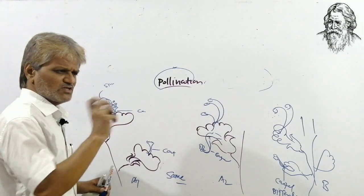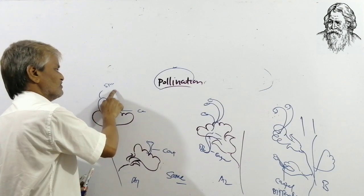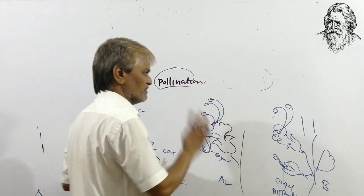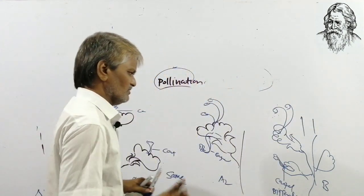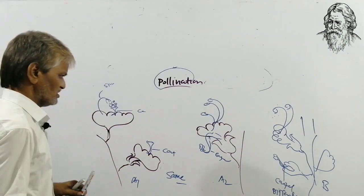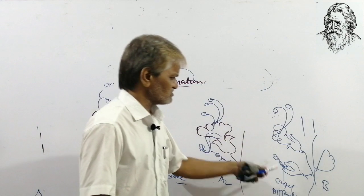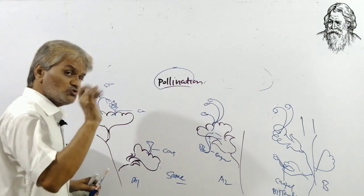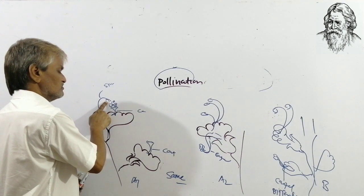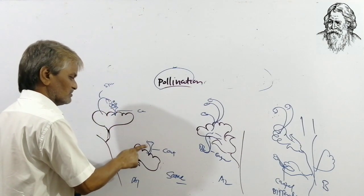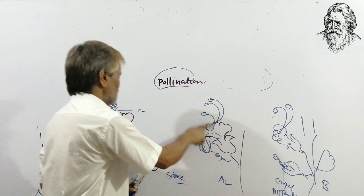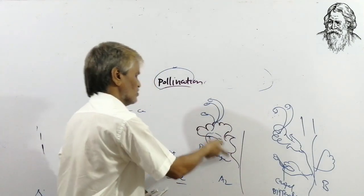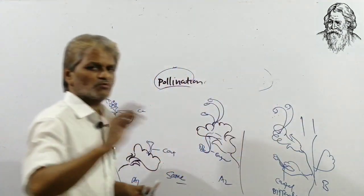I want to define the term pollination. The male part is called the androecium and the female part is called the gynoecium. This flower is bisexual. Transfer of pollen grains from anther to the receptive stigma of the same flower, or another flower, or another flower of the same plant, or a different plant of the same species or different species — this process is called pollination.